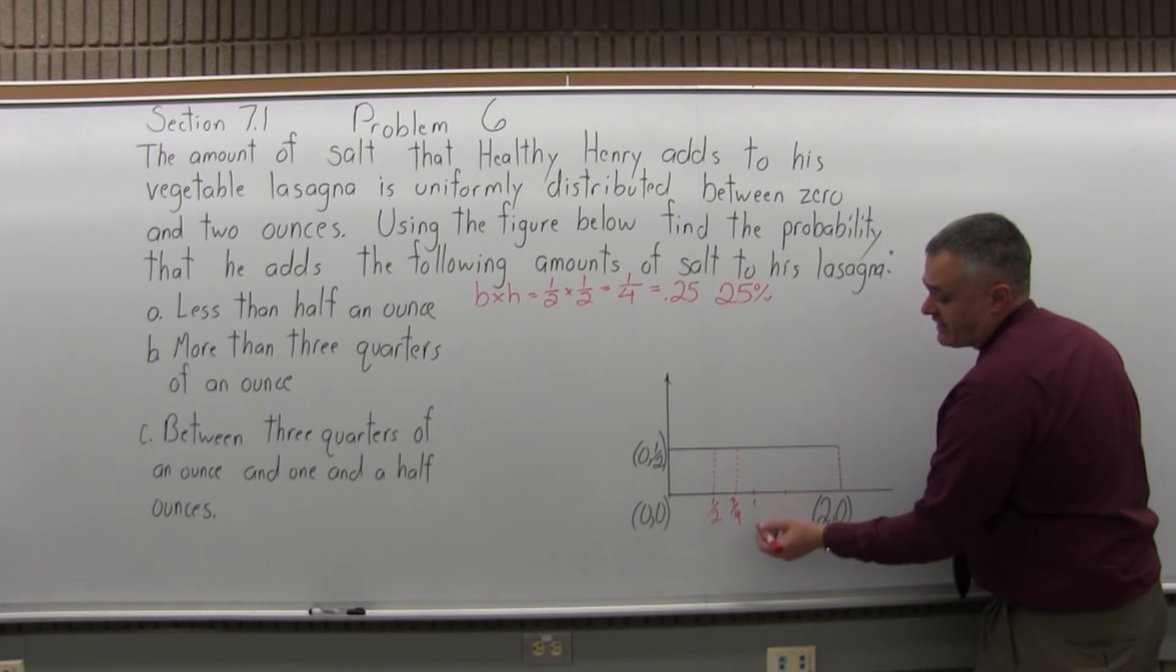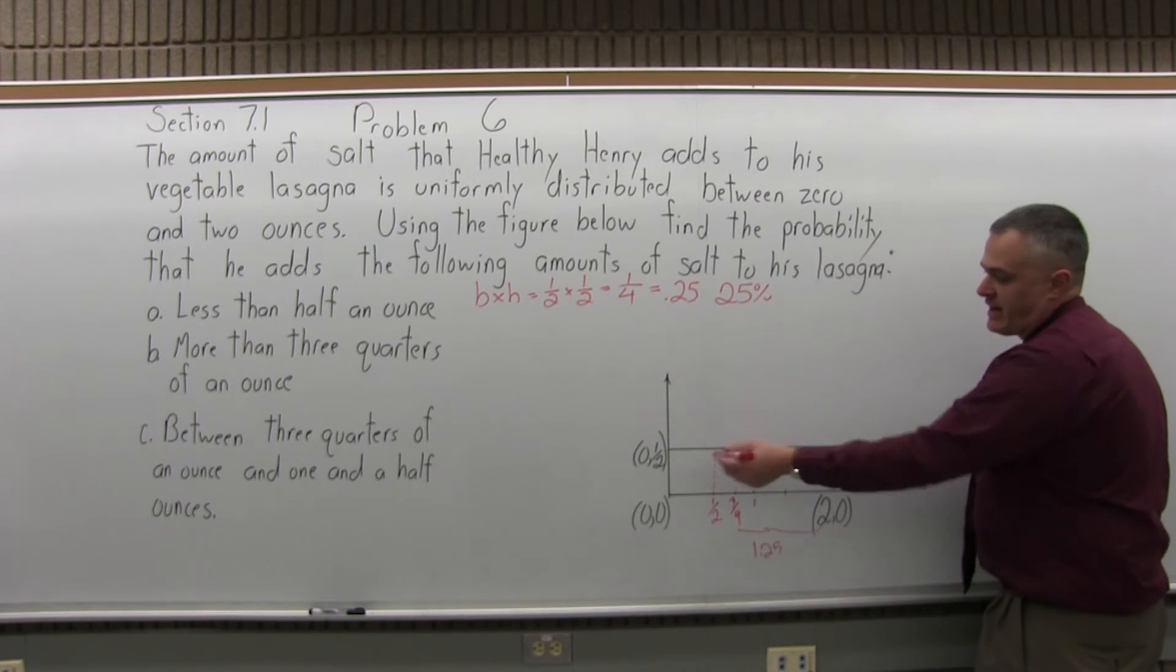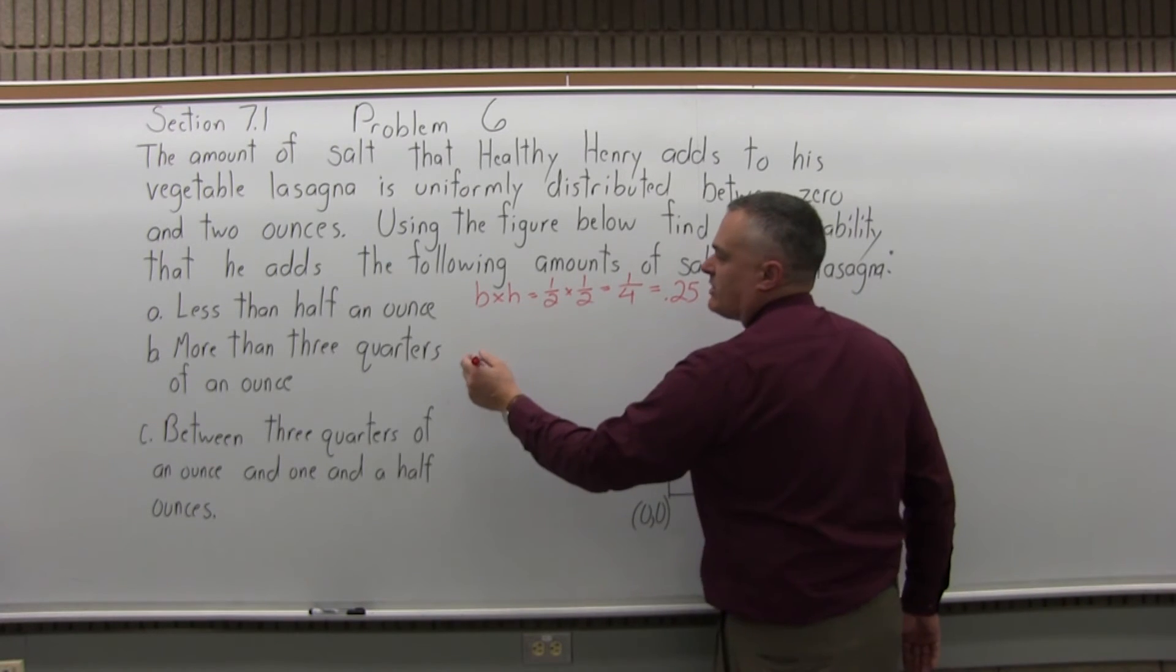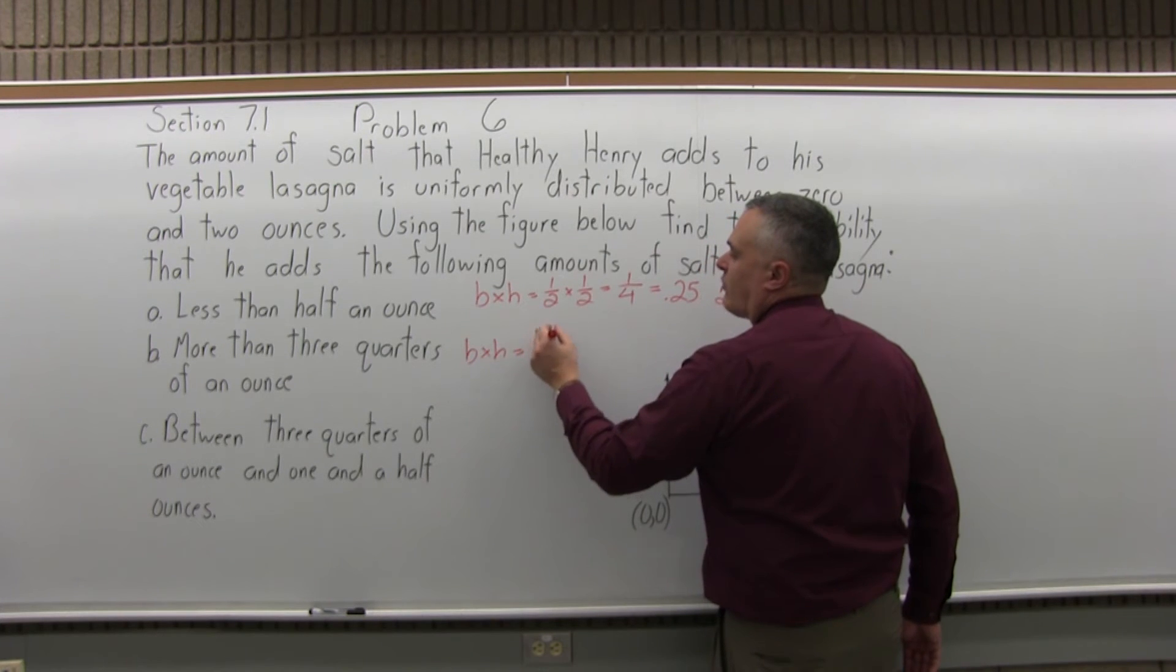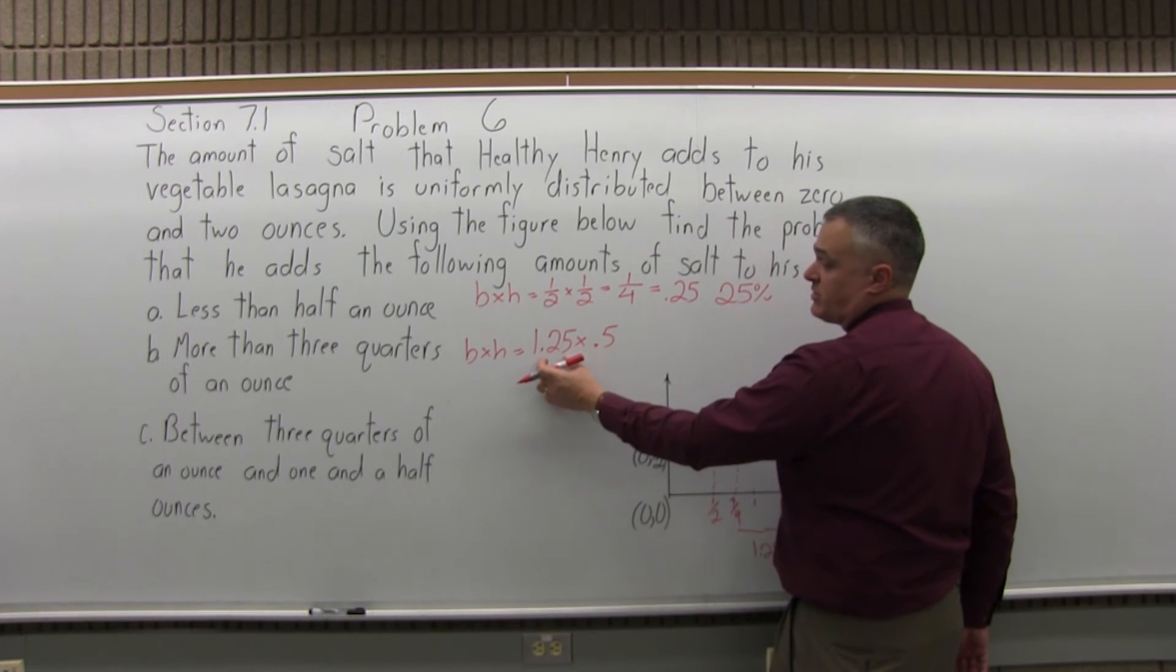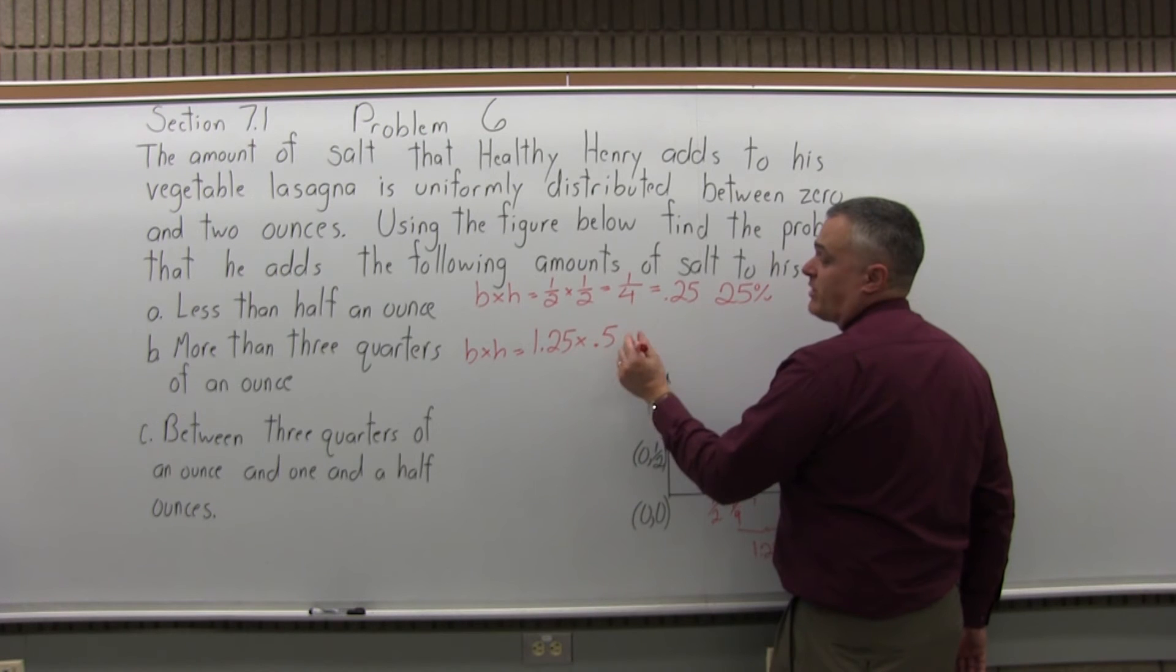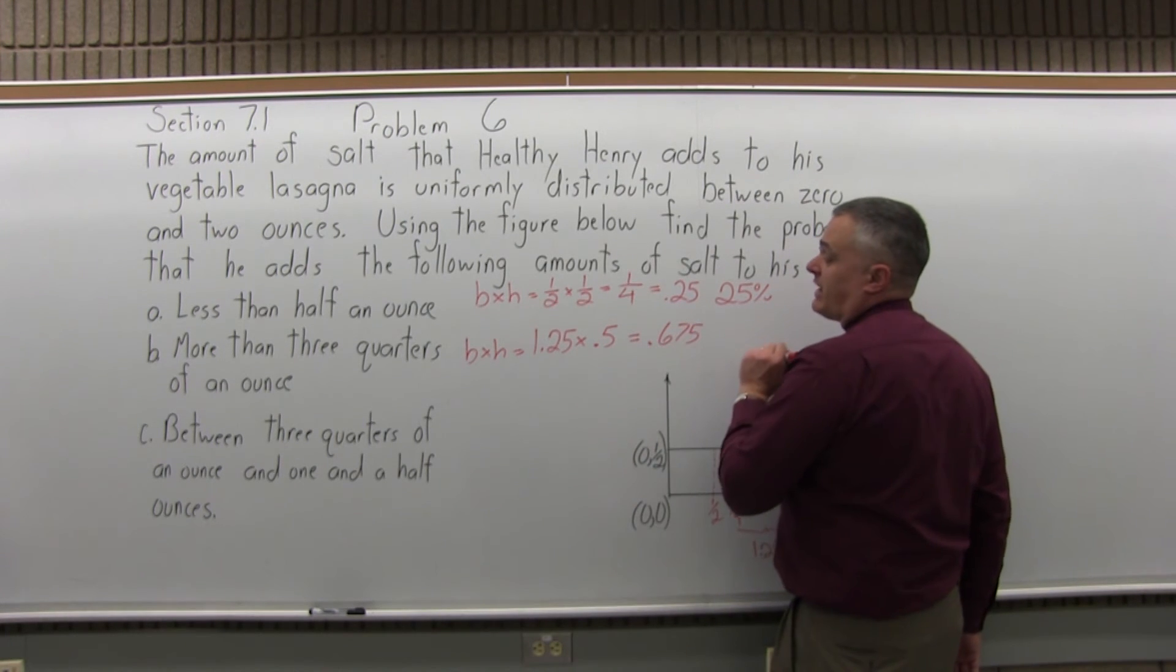So we want the base and the height. The height's still going to be 1 half. So to go from 3 quarters up to 2, we're going 1 and a quarter or 1.25. And the height is 1 half. Let's make it all decimal. So base times height will have 1.25 times the height of 0.5. So the base is 1.25 times the height of 0.5. So that would be 0.675 if you multiply that.